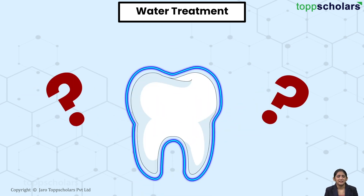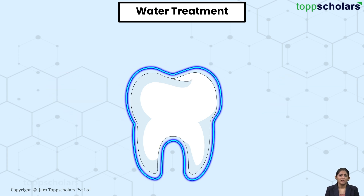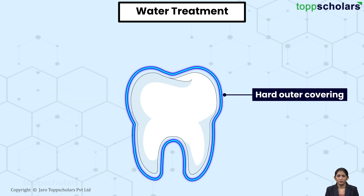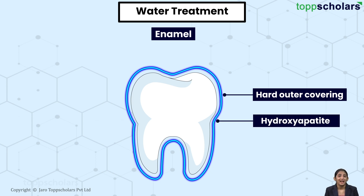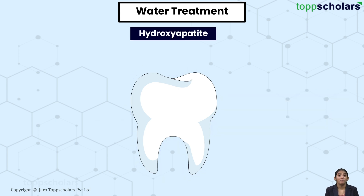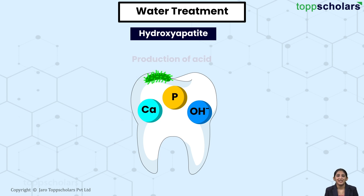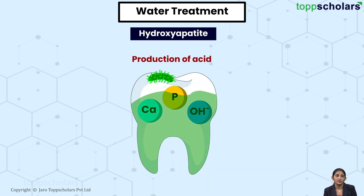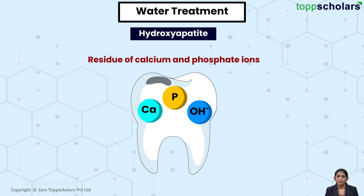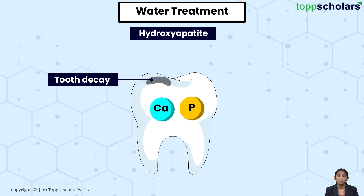Our tooth actually has a hard outer covering which is called the enamel. That is made up of hydroxyapatite, which is a compound of calcium, phosphorus, and hydroxide. When bacteria in our mouth feed on food particles, they produce acid that dissolves the hydroxyapatite. What is left behind is a residue of calcium and phosphate ions that is responsible for tooth decay.